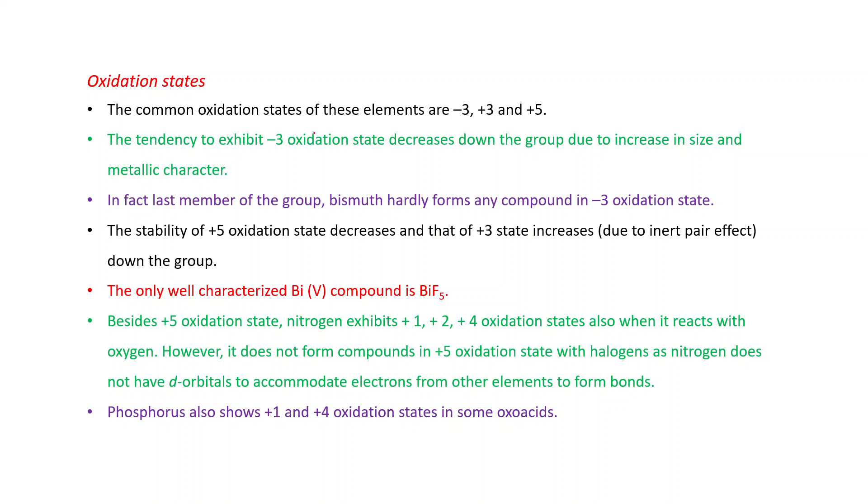Oxidation states. The common oxidation states of these elements are -3, +3, and +5. Chemical reactivity is defined by the oxidation state, so this is an important part. The tendency to exhibit -3 oxidation state decreases down the group due to increase in size and metallic character. As we know, metals generally do not show negative oxidation state. In fact, the last member bismuth hardly forms any compound in -3 oxidation state. Stability of +5 oxidation state decreases and that of +3 state increases due to inert pair effect. The only well-characterized bismuth(V) compound is BiF5.